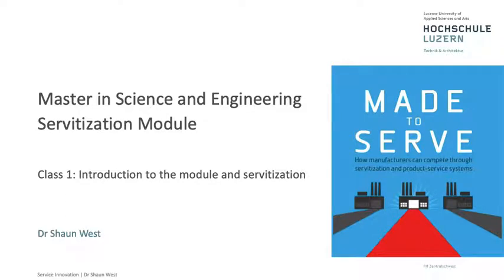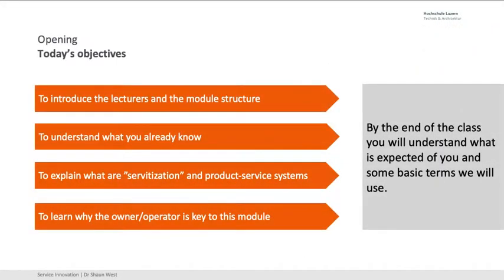Welcome to Class 1 of Servitization for the Master in Science and Engineering program. The objectives for Class 1 are: to introduce the lectures and the module structure, help you understand what you already know, explain what the word servitization actually means and what product service systems are in context, and learn why the term owner-operator is key to this module.